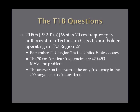Which 70-centimeter frequency is authorized to a technician class license holder operating in ITU Region 2? Break it down — ITU Region 2 is the United States, and that's the only one you have to remember. The 70-centimeter amateur frequencies are 420 to 450 MHz. The only answer on the exam in the 400 range is the correct one — no trick questions.